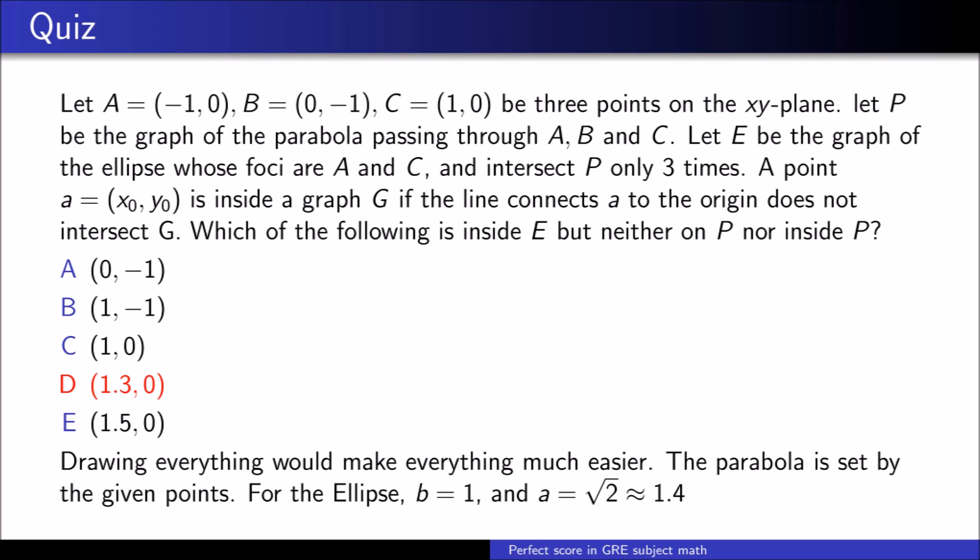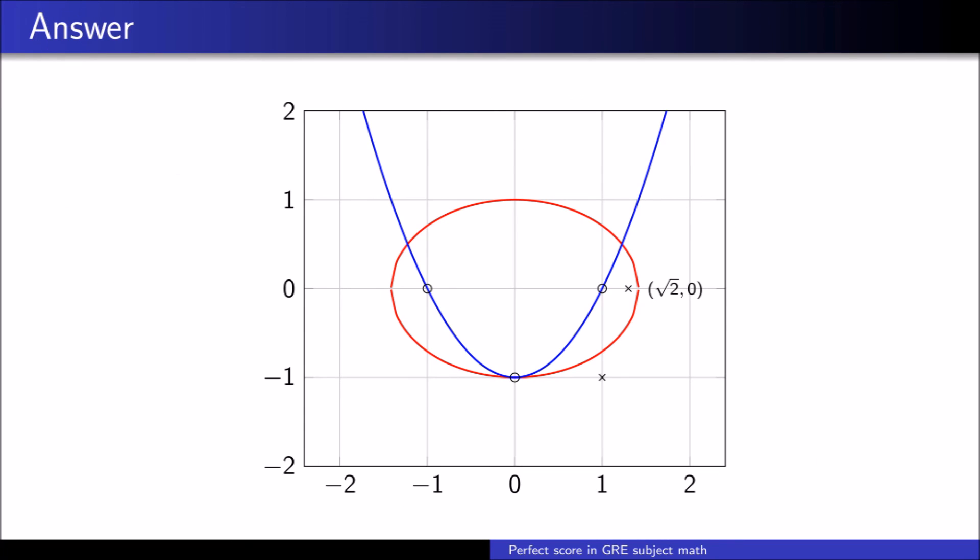By trying different minor axis points of the ellipse, you see that you can choose b equals 1 to meet the criterion of three points of intersection between the graphs. Then you can see that the major axis A of the ellipse, which is the distance between the b point and one of the focus points, is square root of 2. It is beneficial to remember that square root of 2 is approximately 1.4 and the answer follows. This is the exact drawing.